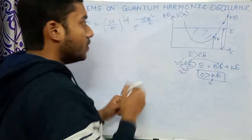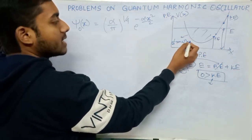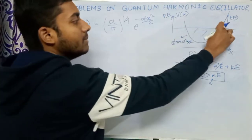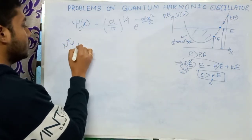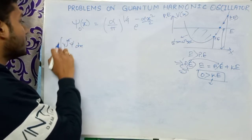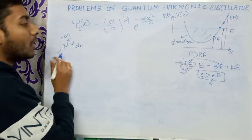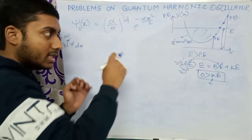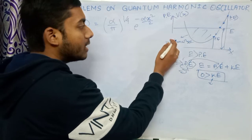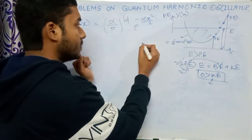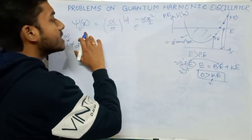In our quantum harmonic oscillator, the potential energy is (1/2) m omega² x². To find the boundary limit for the classically forbidden region, we equate this potential energy with the total energy and set up the integral: psi* psi dx from that boundary point to infinity.